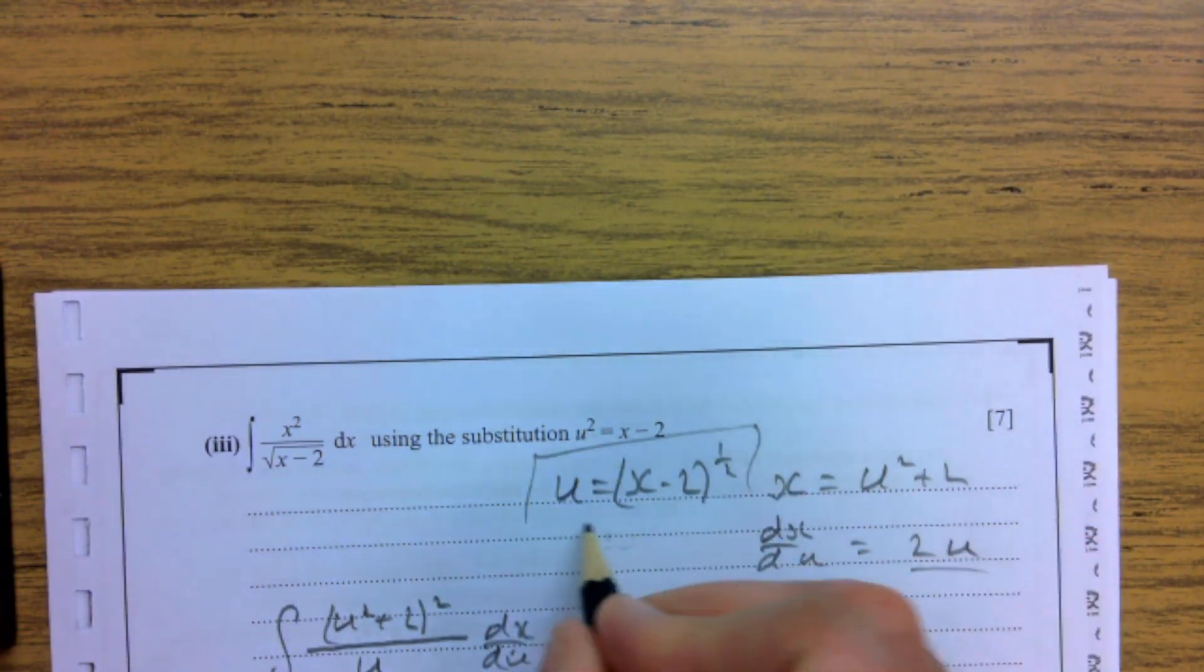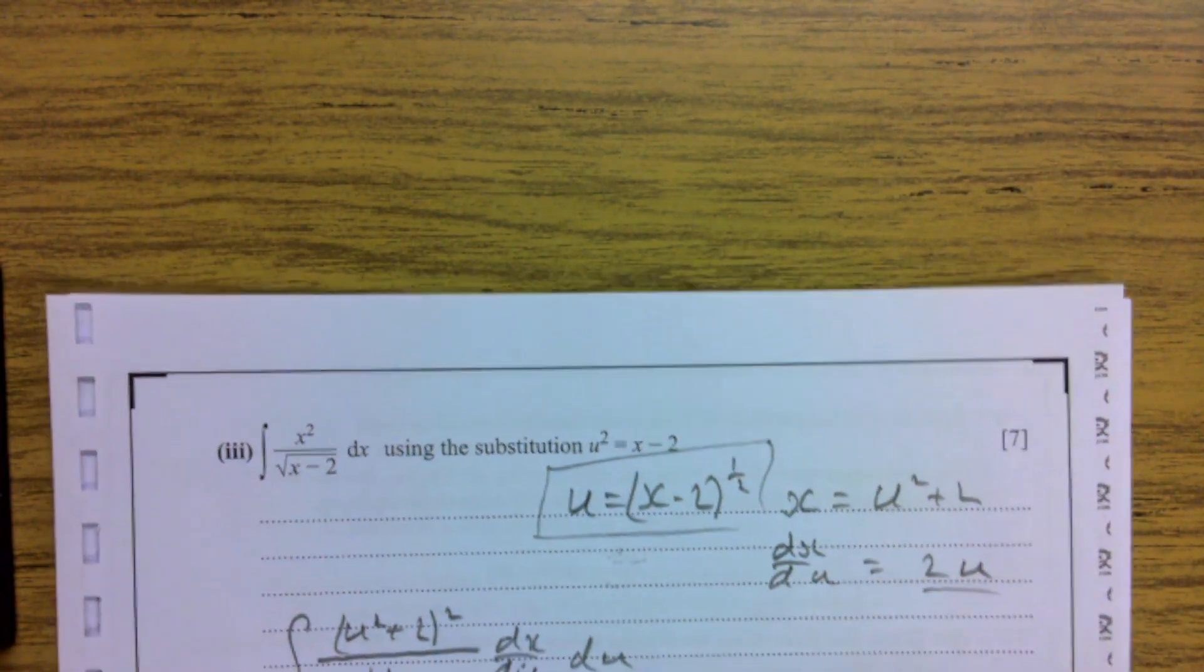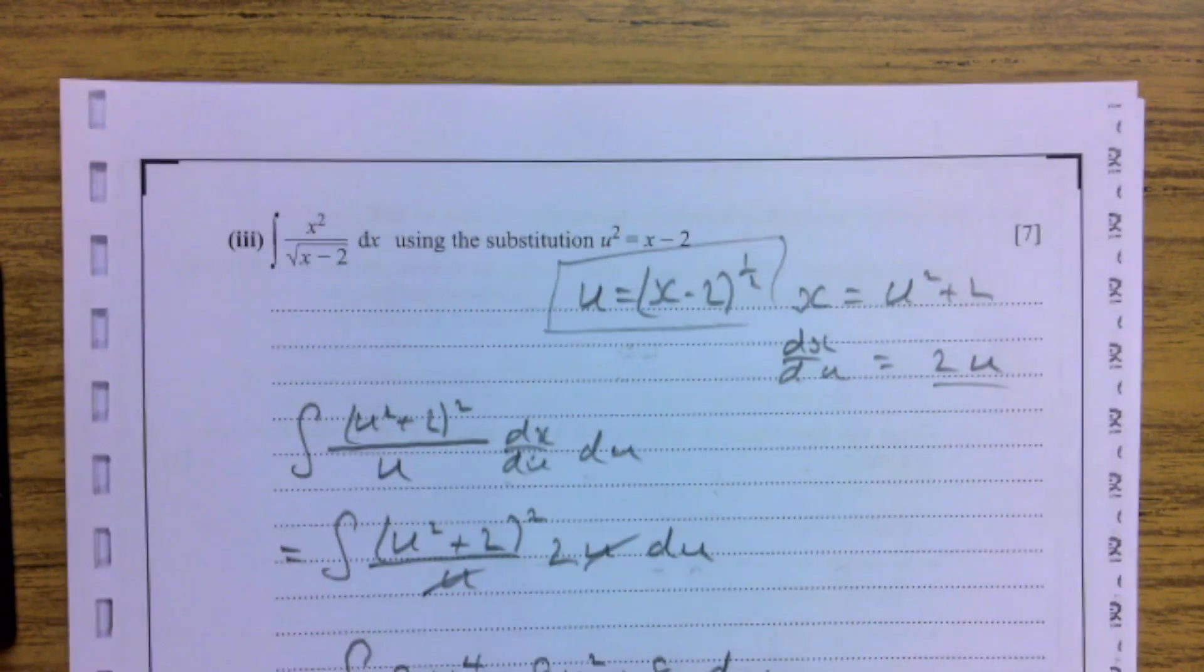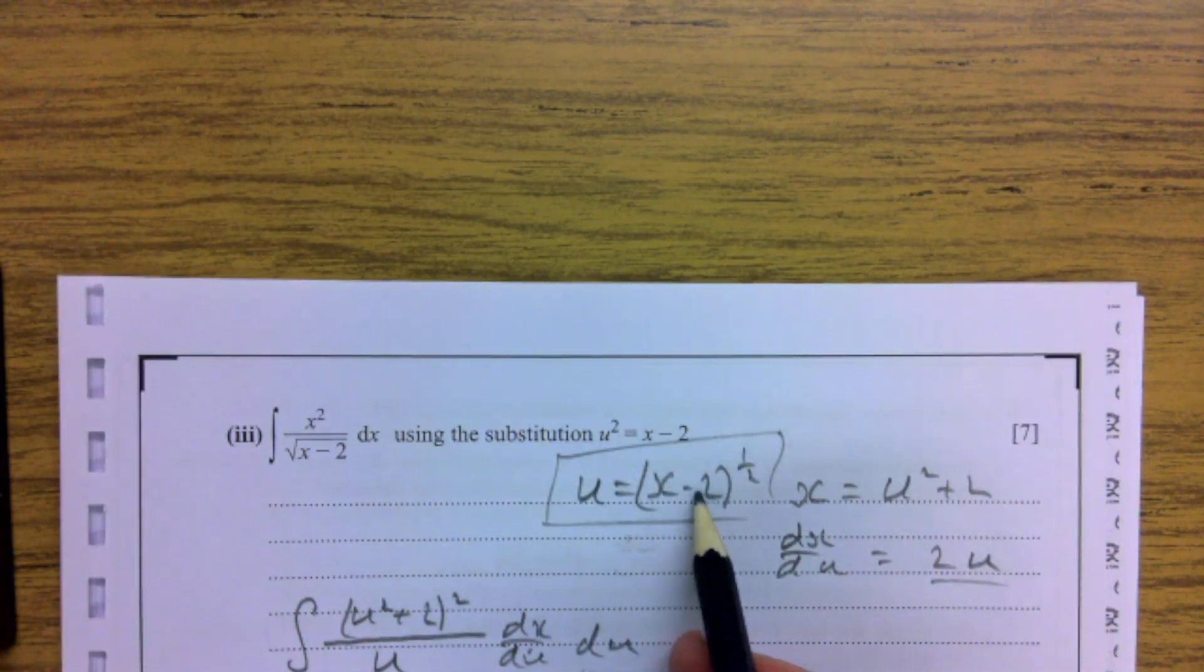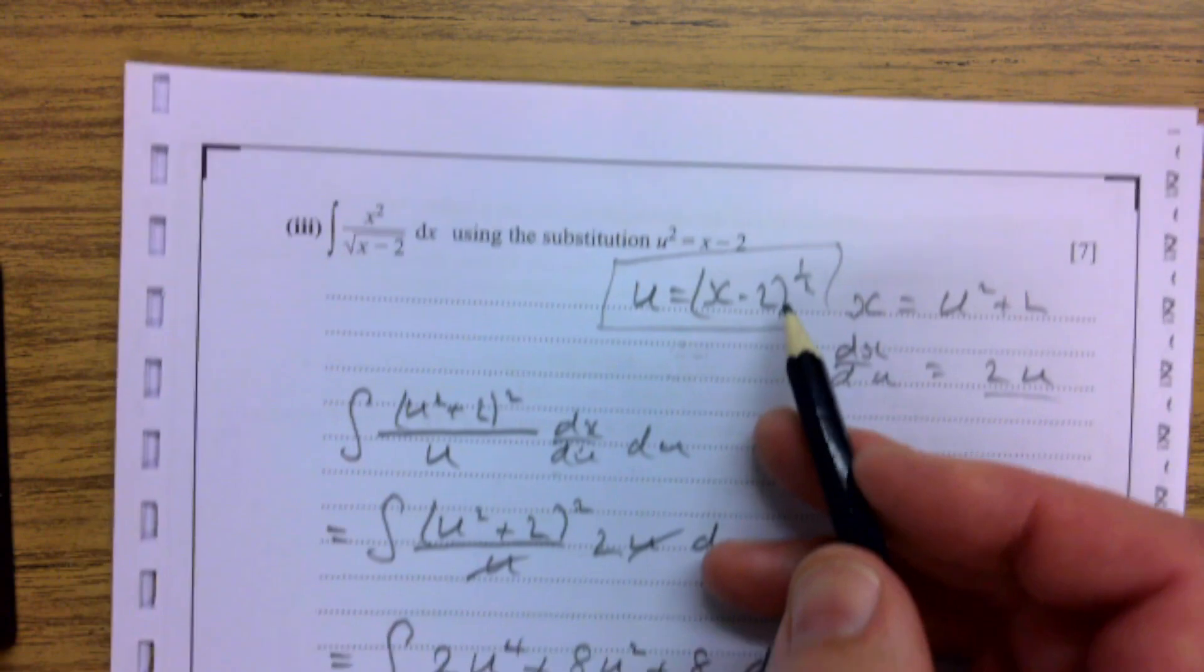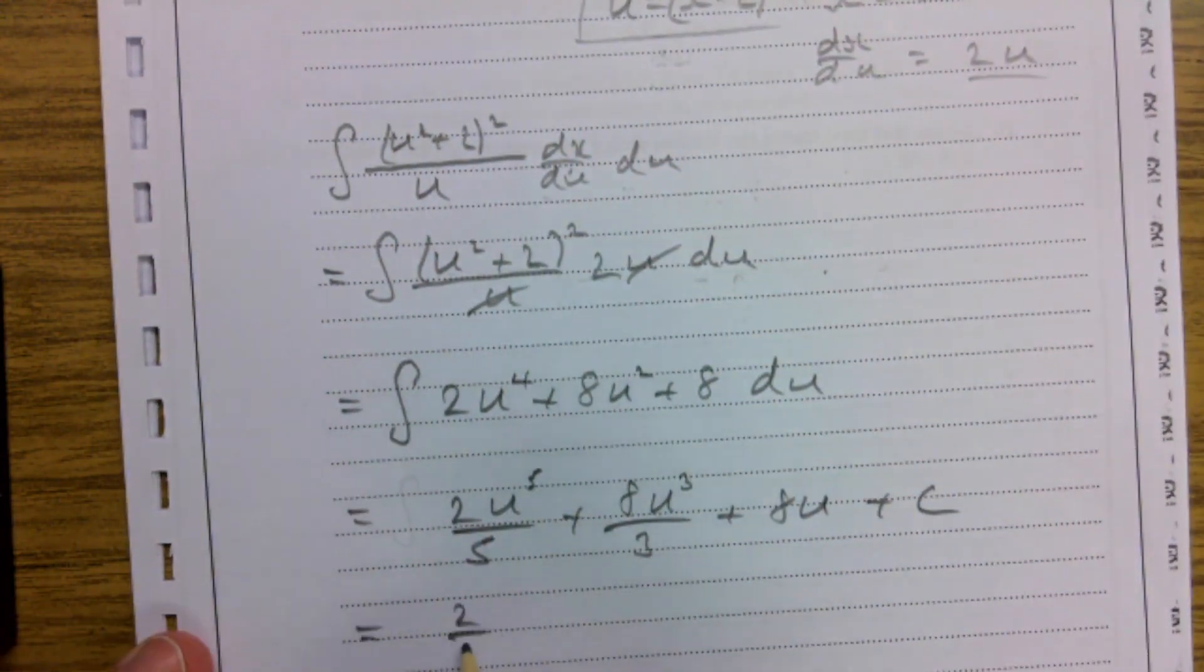Then I'm subbing that in. So if I have u to the 5, which is what I have down there, u to the 5 is going to be x minus 2 all to the power of 5 over 2. So this is going to go 2 fifths x minus 2 to the power of 5 over 2.